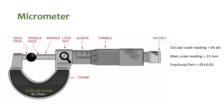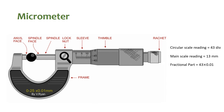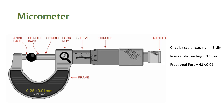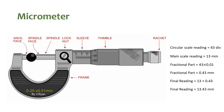Now you need to calculate the fractional part, which is the product of the circular scale reading and the least count. The least count will be used in millimeters here. This product will give you the result that is 0.43 mm. Now to obtain the final reading you need to add the reading of the main scale and the fractional part, which will give you the final result of 13.43 mm.